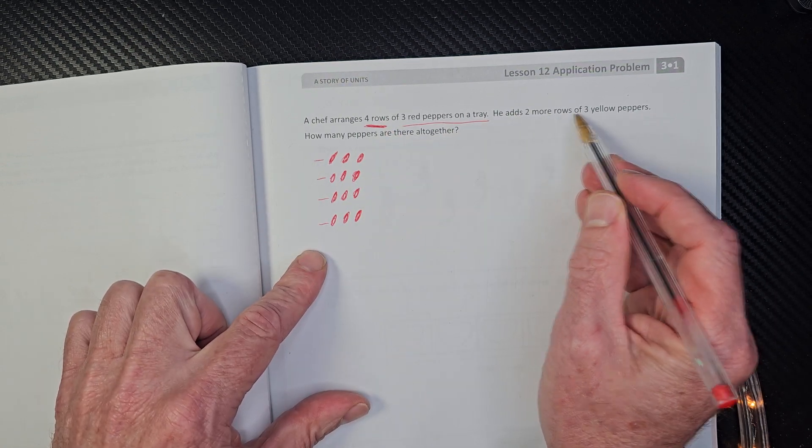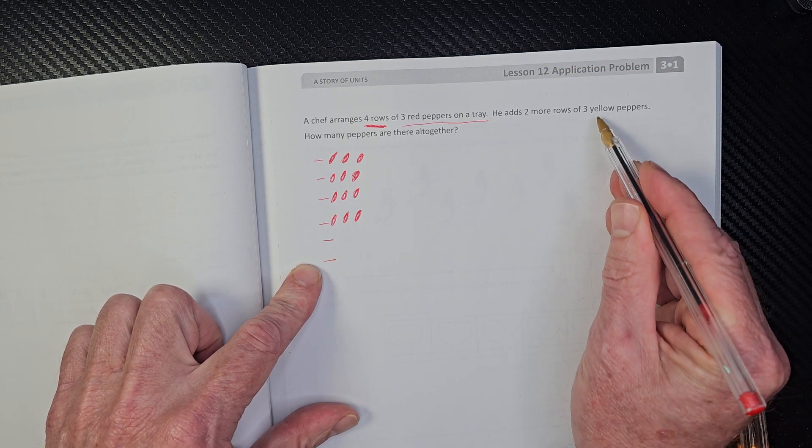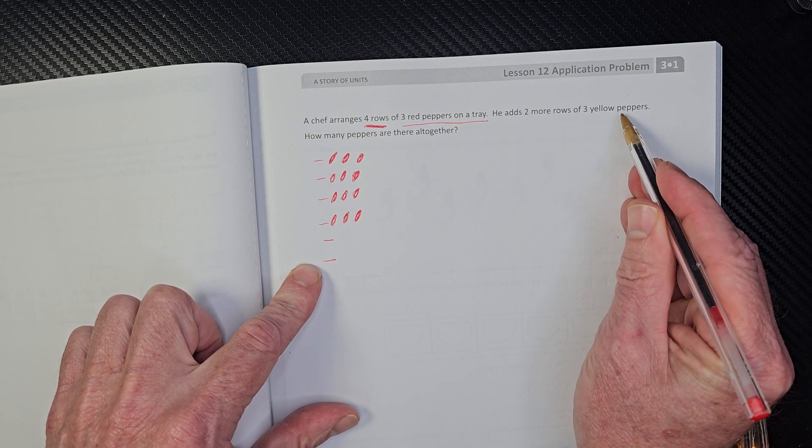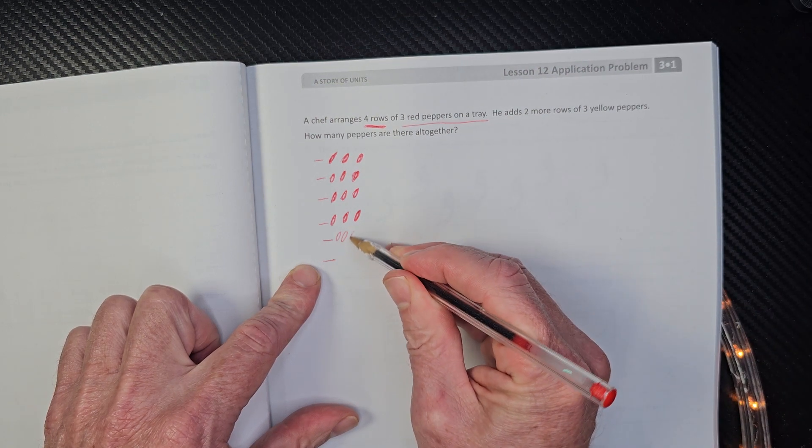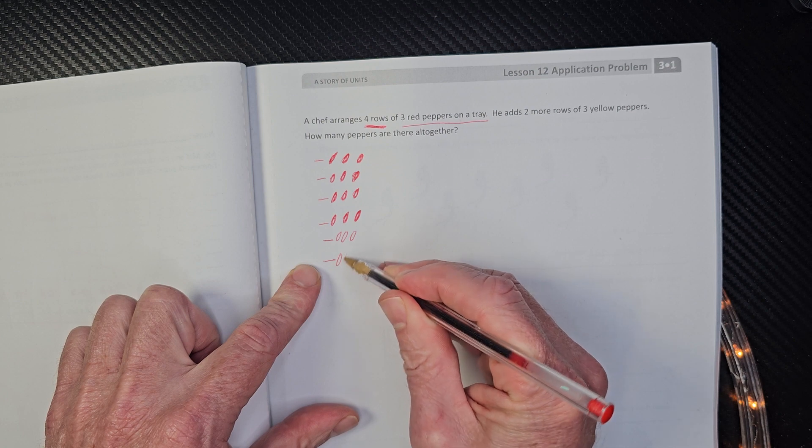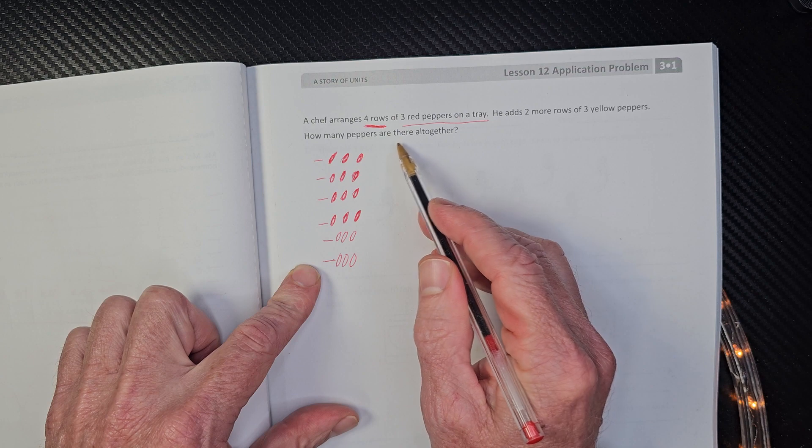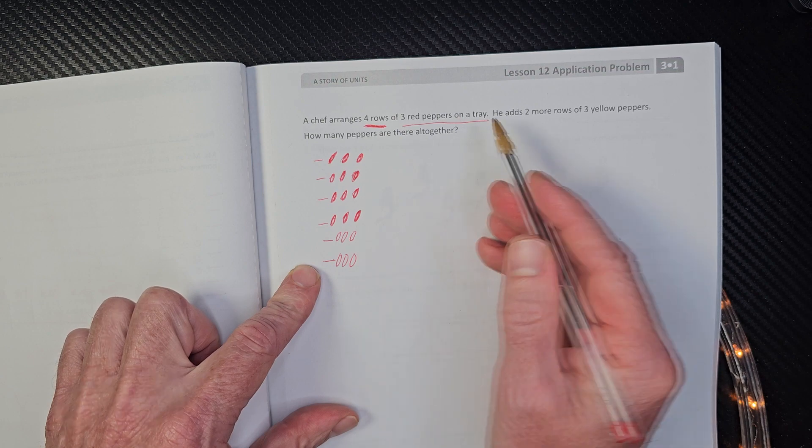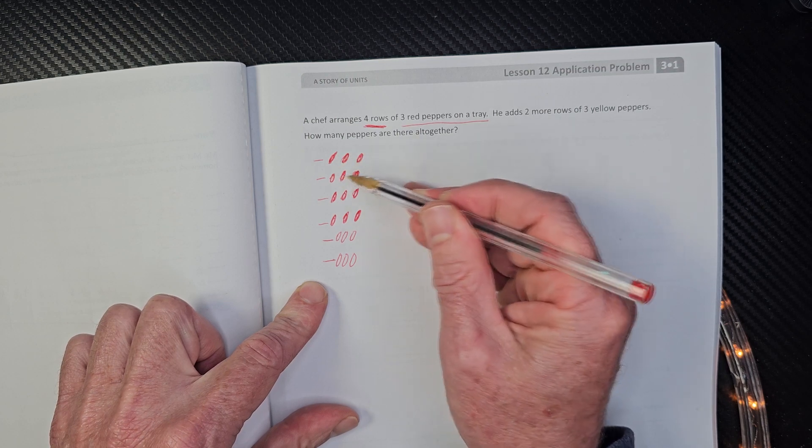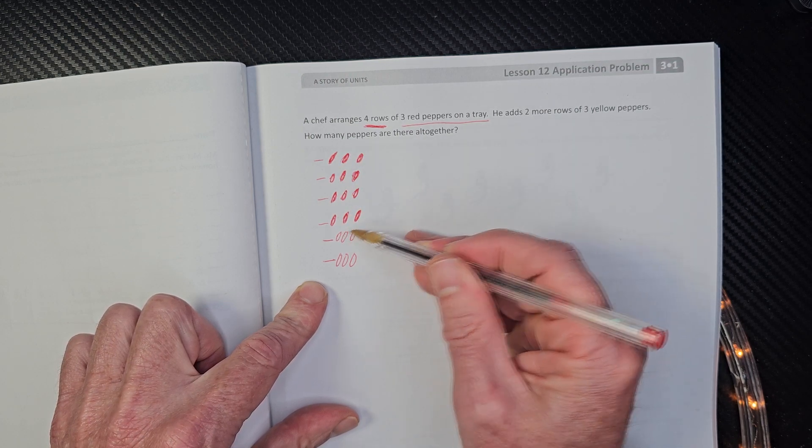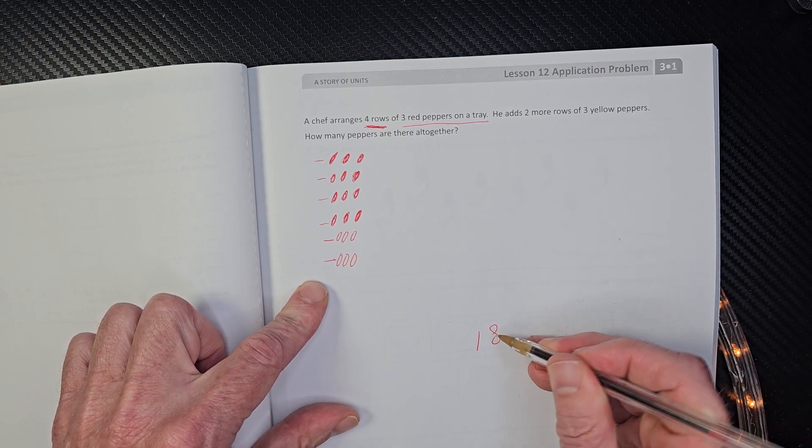And then he adds two more rows. So I'm going to add two more rows - one, two, of three yellow peppers. So I'm going to just put in some yellow peppers. I'm going to make them hollow. So there's all the peppers. So it says, how many peppers are there all together? So we have to go ahead and add that. So we can go one, two, three, four, five, six, seven, eight, nine, ten, eleven, twelve, thirteen, fourteen, fifteen, sixteen, seventeen, eighteen. So we have 18.